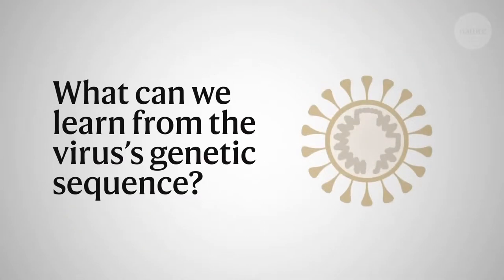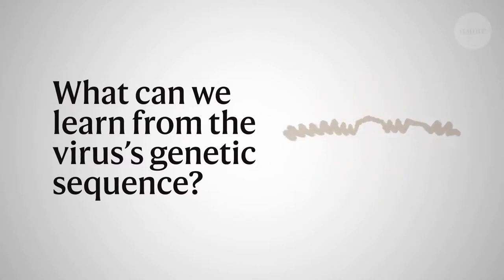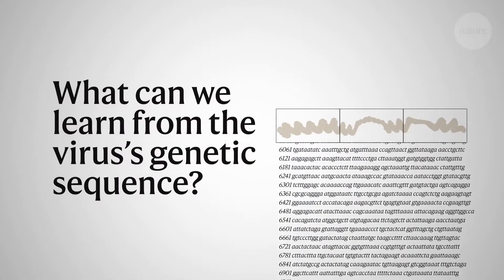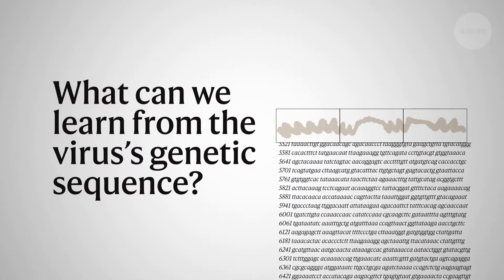The virus's genetic code could offer clues to its origins and spread. Labs in China and Thailand have sequenced at least 19 strains from infected people and made them publicly available. Analysis is ongoing.